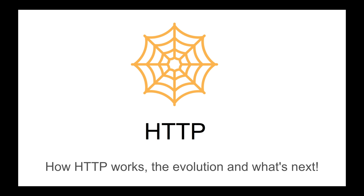We will also learn about the evolution of HTTP — starting at 1.0, what changes were made, moving to 1.1, then HTTP 2, which Google helped with via Speedy, and eventually HTTP 3. HTTP 3 is still experimental as of the making of this video — it has been approved by the Internet Engineering Task Force but is still under experimental status.